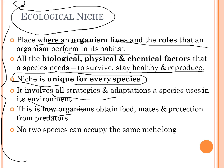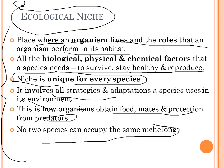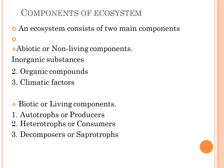A niche also describes how organisms obtain food, mates, and protection from predators. No two species can occupy the same niche, because they need to adapt to the environment and obtain food differently. That is why every species has a unique niche.